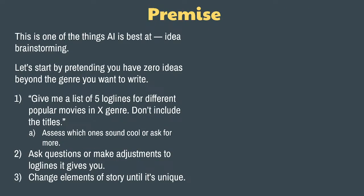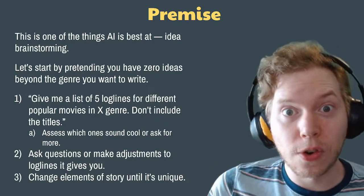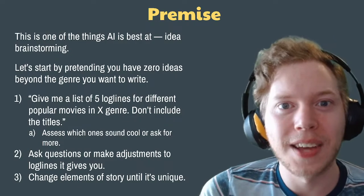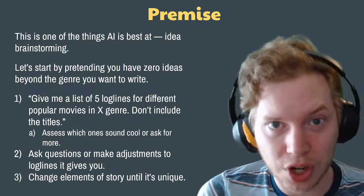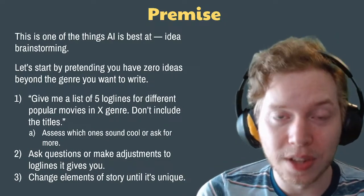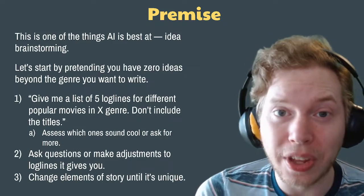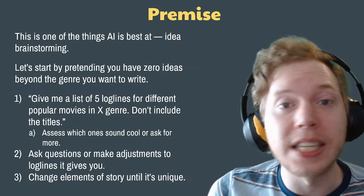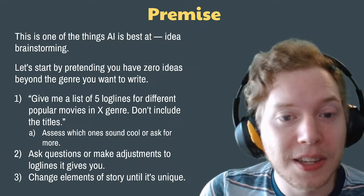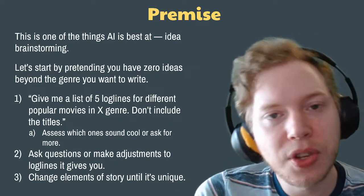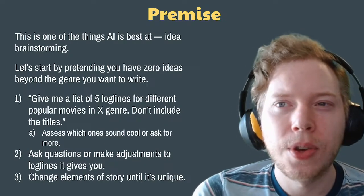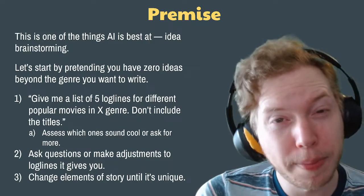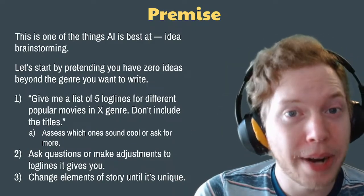Premise and brainstorming is one of the things AI is just best at, because the less it has to go into detail on how ideas fit together and work, the more freedom it has to just come up with stuff without having to flesh out or justify. There's a huge difference between a hundred-page document and a one-sentence logline, and it won't carry you across the finish line for the whole thing. But for the seed of an idea, it's excellent at generating stuff. Start by saying 'Give me a list of five loglines for different movies in X genre.' I recommend saying don't include the titles, so you feel more freedom to mix and modify things.